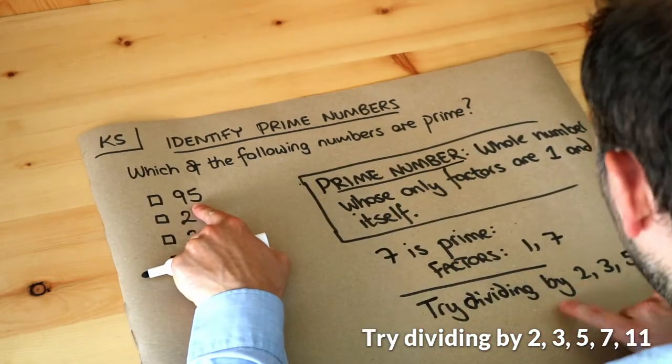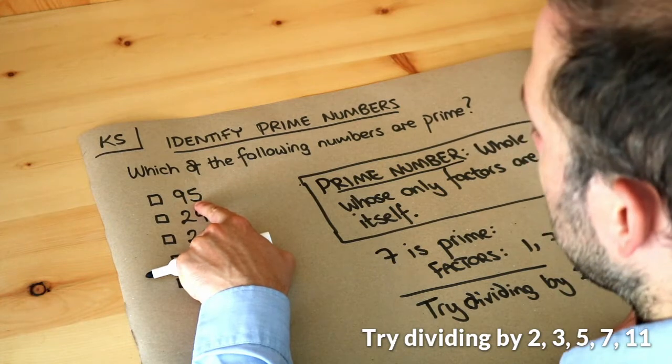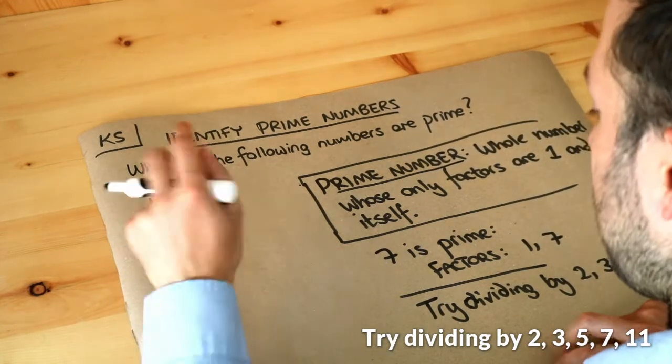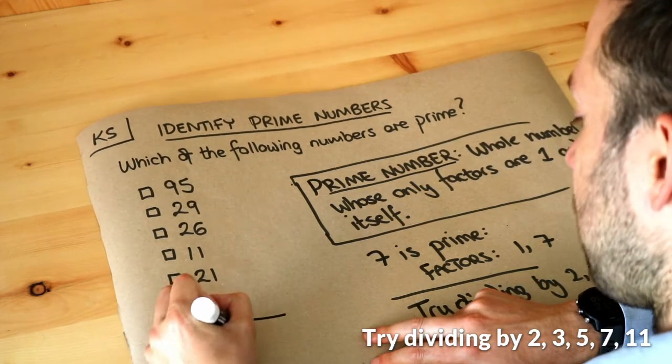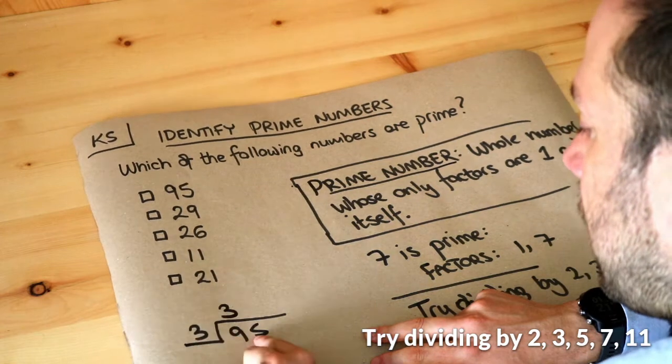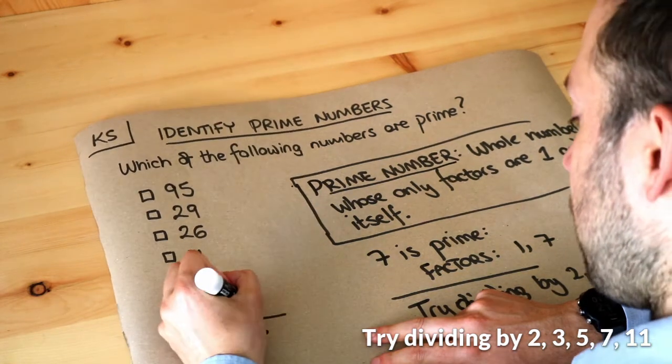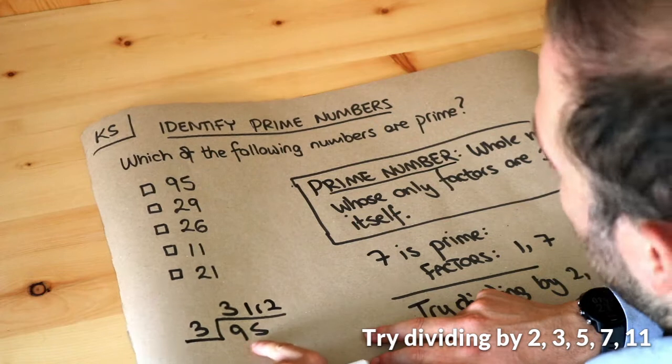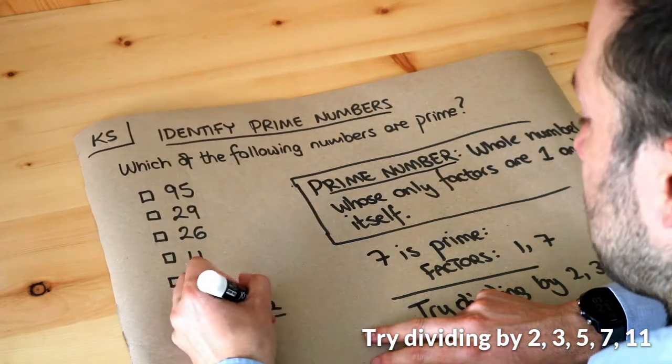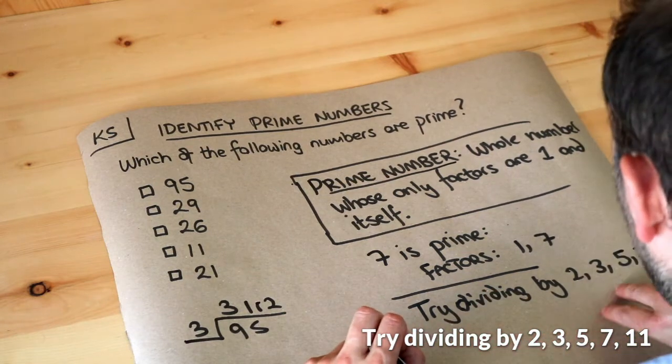So 95. Does it divide by two? Well, it's not an even number, so it's not divisible by two. Does it divide by three? Let's try that. 95 divided by three. Well, three goes into nine three times exactly, and three goes into five once remainder two, so it doesn't divide exactly. 95 doesn't divide exactly by three because we have a remainder.